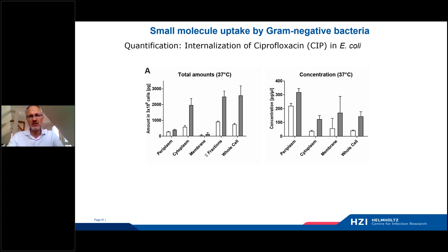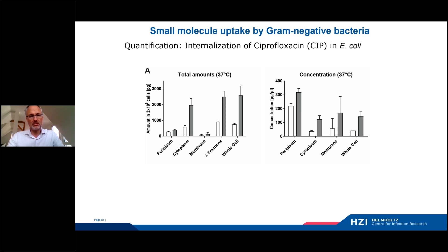The result is shown here for the standard compound ciprofloxacin, which has been used in many accumulation studies. In terms of overall amounts, the majority of compound resides in the cytoplasm. If we sum up the amount in all fractions, the result is pretty similar to the quantities we get in a simple whole cell assay — so we don't lose a lot.